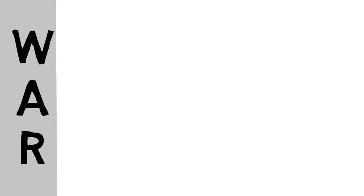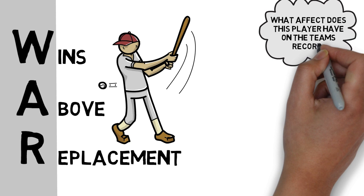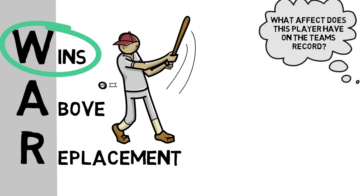WAR is an acronym for Wins Above Replacement. It is an estimated value of a professional player's past performance, which answers the age-old question of what effect does this player have on this team's success. It is displayed as one number — the number of wins this player's talent in the lineup has contributed over a replacement level player.